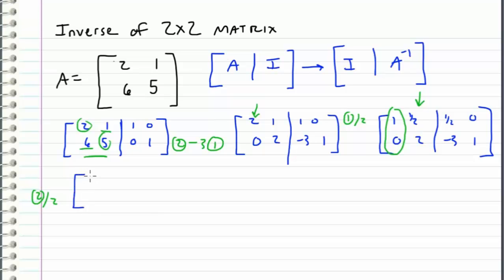So when I perform this operation this first row remains the same. And then the second row is all divided by 2 so 0, 1 and I get a negative 3 halves and a 1 half right here.